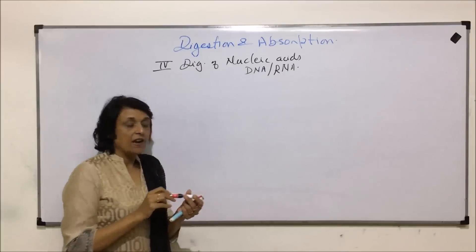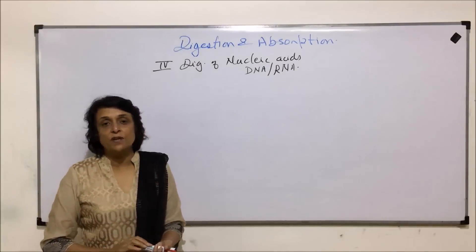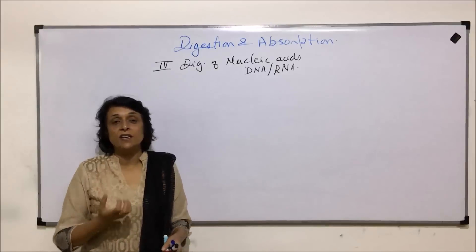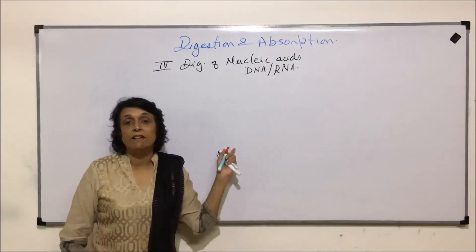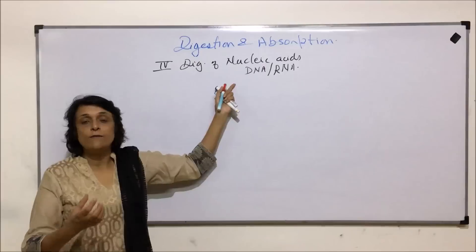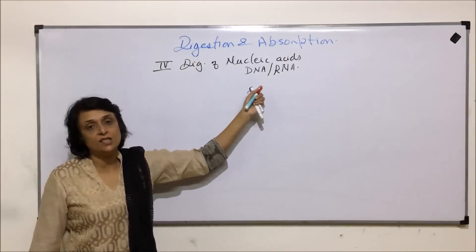Now first thing, from where do we get this? Because when we were talking of carbohydrate, proteins and fats, we knew that this is the material from which we are getting this nutrient. In case of DNA and RNA, what is that food material which gives us these nucleic acids?